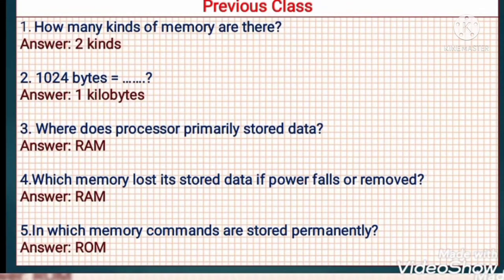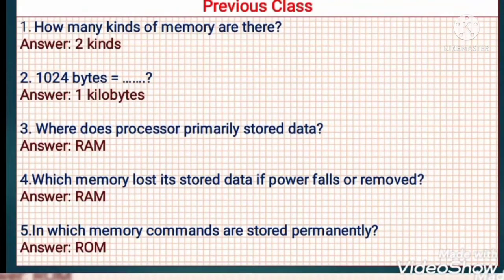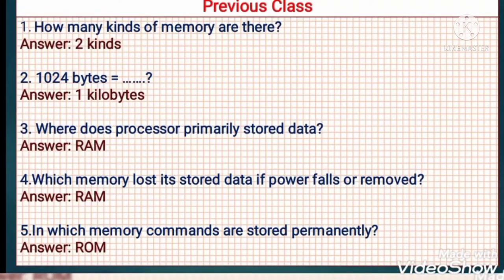How many kinds of memory are there? There are two kinds of memory — primary memory and secondary memory. Question number 2: 1024 bytes equal to what? That means how many kilobytes? It is 1 kilobyte.